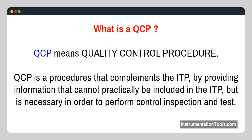What is a QCP? QCP means quality control procedure. QCP is a procedure that complements the ITP by providing information that cannot practically be included in the ITP, but is necessary in order to perform control, inspection, and test.